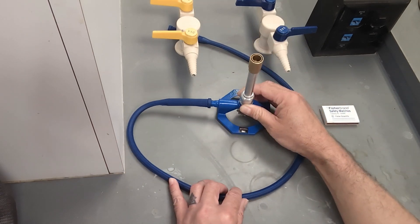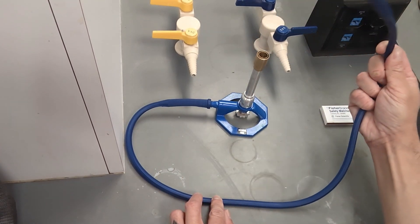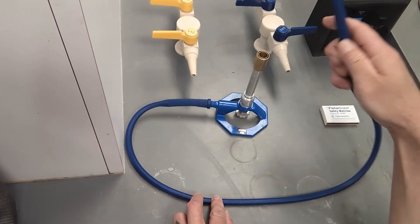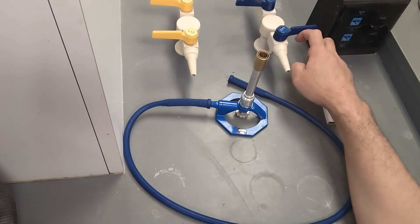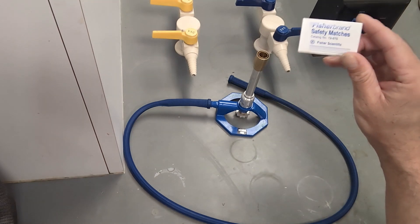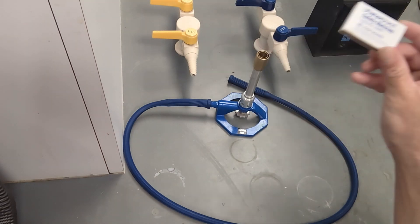The Bunsen burner is going to have a gas hose attached to it in order to have a supply of gas from a gas line. The gas line will have an open and close valve and you will also need some matches to use for your Bunsen burner.